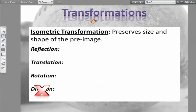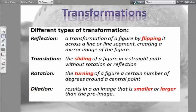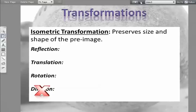Let's talk about isometric transformations. Isometry means you preserve the size and shape of the pre-image — it doesn't change. When you do a reflection, the size and shape doesn't change. When you do a translation, the size and shape does not change. When you do a rotation, the size and shape does not change. However, a dilation results in an image that is smaller or larger than the pre-image, so it is not isometric.